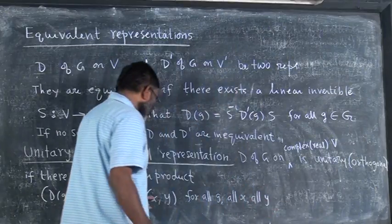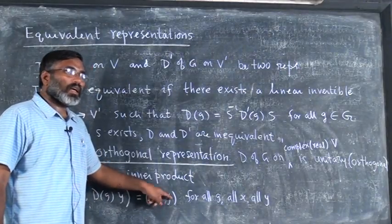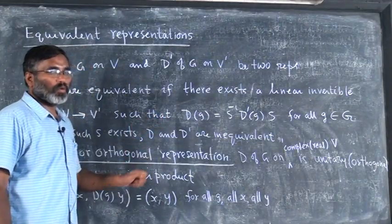Where are these x and y? x and y are in the vector space, g is in the group.